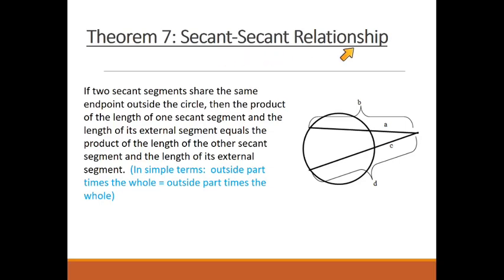This is the secant-secant relationship. Now this one is a mouthful. I'm going to read it, but then I'm going to unpack it and try to put some meaning to this. If two secant segments share the same endpoint outside the circle, then the product of the length of one secant segment and the length of its external segment equals the product of the length of the other secant segment and the length of its external segment. In simple terms, I like how this is shown right here: outside part times the whole equals outside part times the whole.